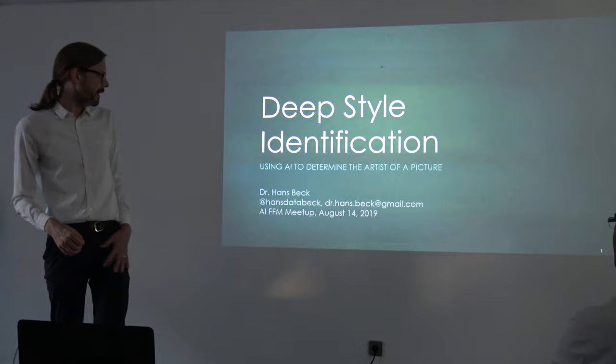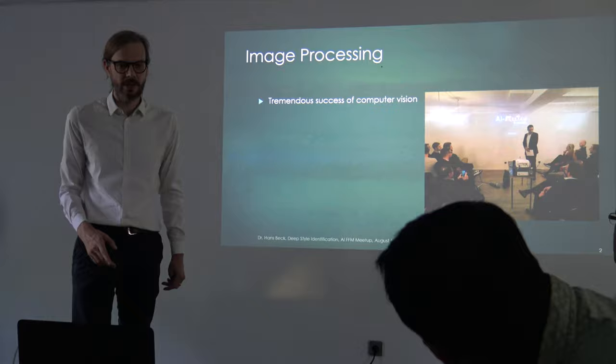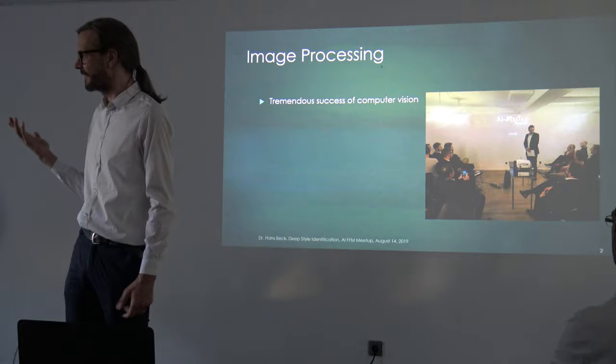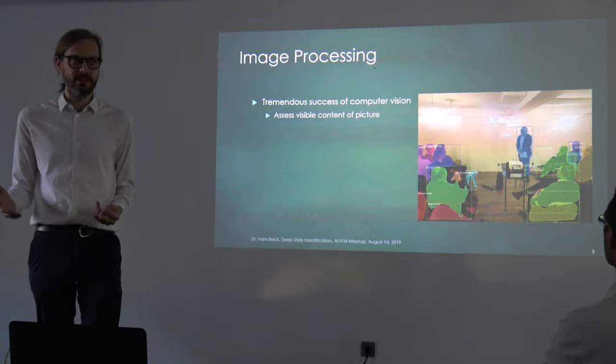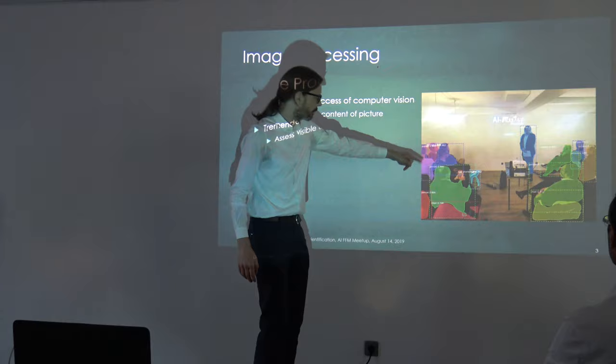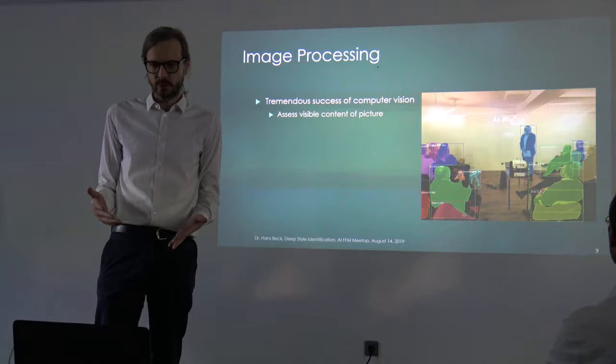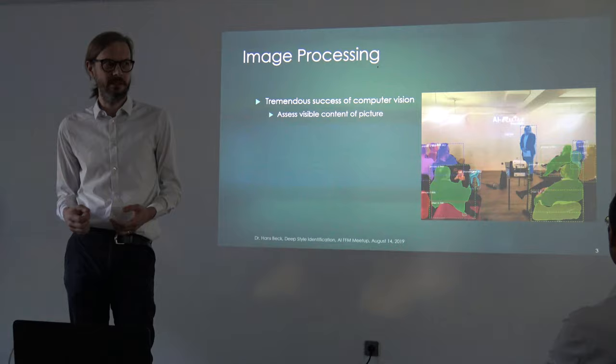So let's go through this. As Danko said, we use AI to determine the artist of a picture. First, to start with — just in general, image processing has had a tremendous amount of success. These typical computer vision algorithms, they detect everything in a picture. You see here there's a person, another person, it detects the chairs, even correctly, there's a cell phone here. So they allow you to assess the visible content of a picture.